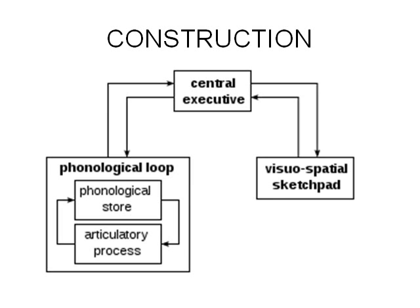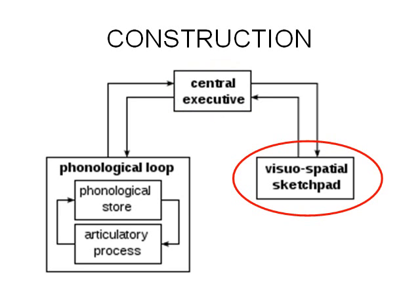There's a very easy-to-understand diagram that puts all this together. Up at the top you can see the central executive — it's got instructions coming out of it and information going back into it; it's in charge. Down on the right and at the bottom you've got the first slave system, the visuospatial sketchpad. That's where your visual memories are processed — things that you see. The visuospatial sketchpad holds onto those memories for a short amount of time but can, of course, get overloaded if there's too much visual stuff to remember.